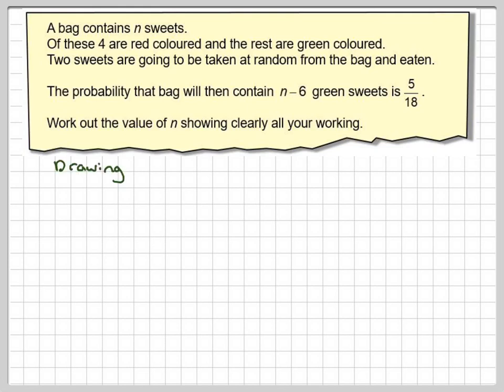One way to attempt this problem is to draw a tree diagram like you normally would with a probability question. So in the first choice we're going to get a red sweet and a green sweet. The probability of getting a red is 4 over n because there are n sweets in the bag. Here, because we've taken 4, we now have n minus 4 over n sweets, the probability of getting a green.